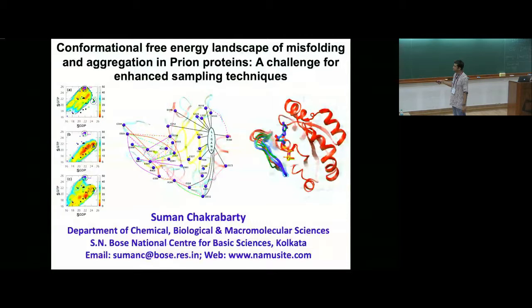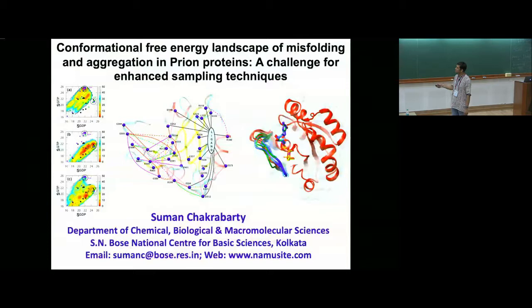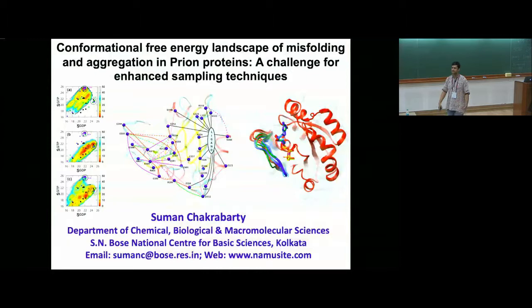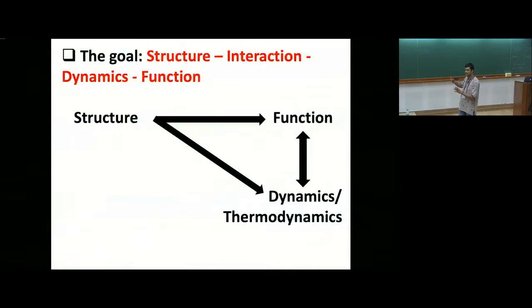As the title suggests, I'm going to primarily talk about this class of techniques called enhanced sampling techniques, which is beyond the regular molecular dynamics simulations that many of you have probably heard of. I'm going to show how computing the free energy landscape can provide a really useful and quantitative yardstick when looking into complex biomolecular or biophysical processes. Misfolding and aggregation in prion proteins will be just a test case to show you some of these ideas.